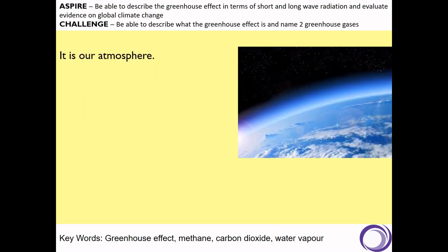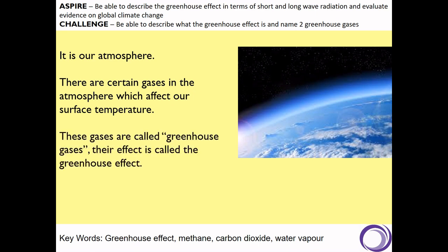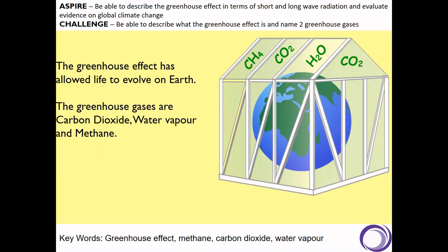It is our atmosphere that causes that difference. There are certain gases in our atmosphere which affect our surface temperature. Those gases are called greenhouse gases and their effect is called the greenhouse effect. You may have heard of this greenhouse effect and heard of it in a negative way. However, it actually is what made Earth hospitable. The greenhouse effect allowed life to evolve on Earth by keeping it at a constant temperature that was suitable for life.